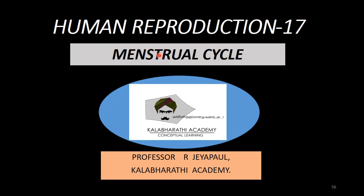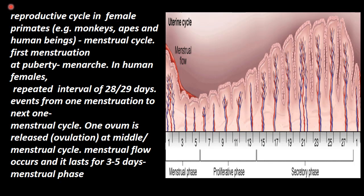After puberty, every month, there is menstruation in females. The menstrual cycle is the reproductive cycle in female primates — that is monkeys, apes, and human beings. In other animals, this is not called the menstrual cycle. For cows, it is called the estrous cycle. So, this is called the menstrual cycle in the case of female primates: monkeys, apes, and human beings.